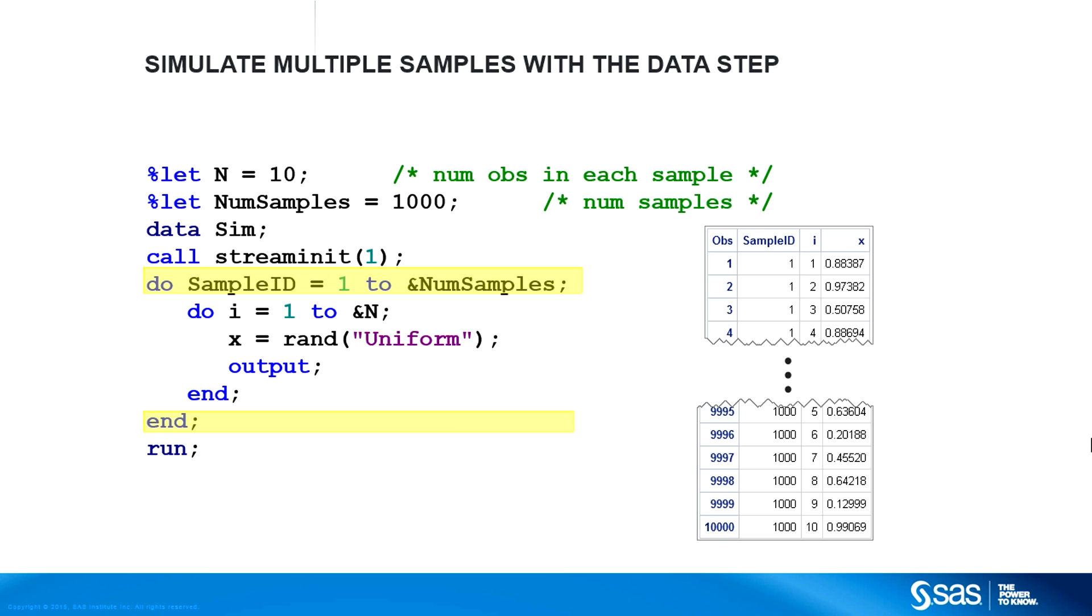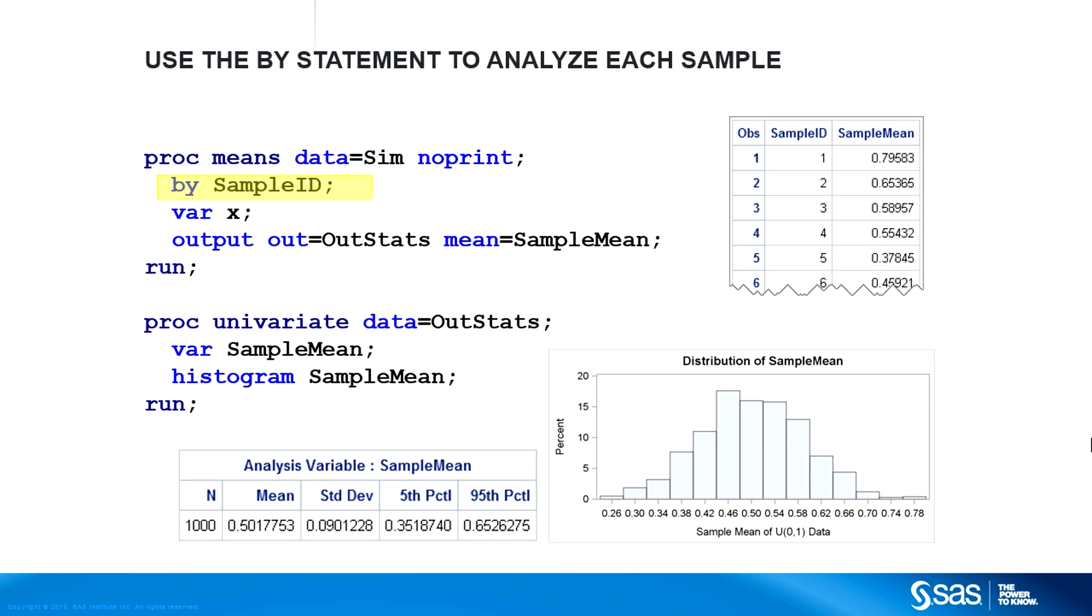Here's a concrete example. Suppose you want to know the sampling distribution of the mean for random samples of size 10 drawn from the uniform distribution on the interval 0, 1. The data step on this slide creates 1,000 samples, each identified by a value of the sample ID variable. The first 10 observations are the first sample. The next 10 are the second sample, and so on. You can call PROC MEANS and use the BY statement to obtain 1,000 sample means.